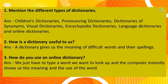Answer the following questions. Question 1: Mention the different types of dictionaries. Answer: Children's Dictionaries, Pronouncing Dictionaries, Dictionaries of Synonyms, Visual Dictionaries, Encyclopedic Dictionaries, Language Dictionaries, and Online Dictionaries. Question 2: How is the dictionary useful to us? Answer: A dictionary gives us the meaning of difficult words and their spelling. Question 3: How do you use an online dictionary? Answer: We just have to type the word we want to look up, and the computer instantly shows us the meaning and the use of the word.